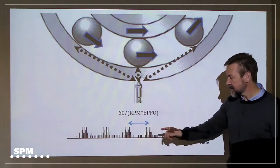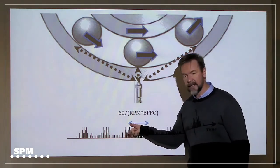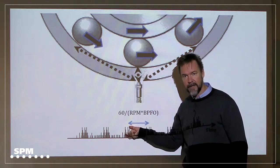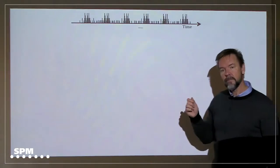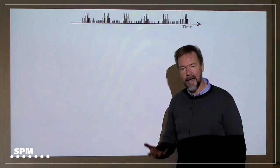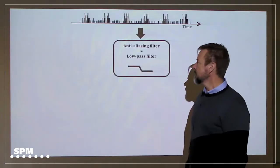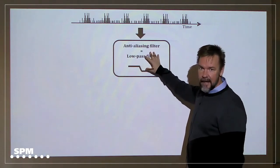Now, if you take this signal, and by the way, the amplitude here of this signal is extremely low. It's very, very low. So if you take this signal and you put it into an analyzer, a hand-held or online system, what you have in an analyzer is an anti-alias filter, that's basically a low-pass filter.